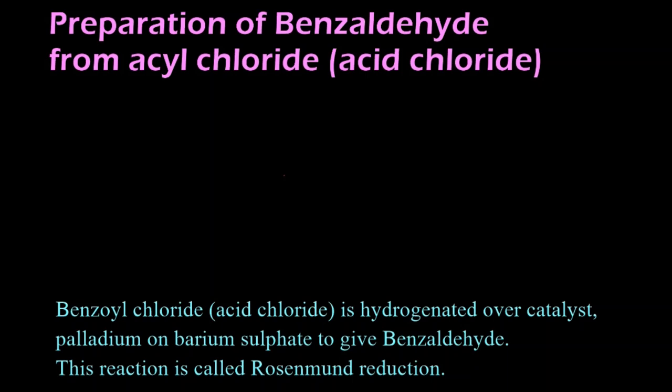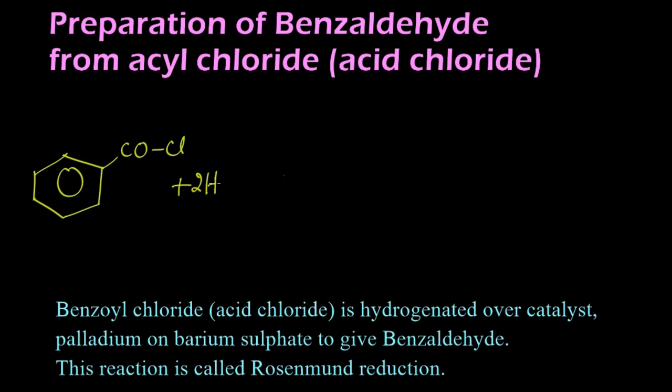In this video we are going to learn the preparation of benzaldehyde from acyl chloride, that is benzoyl chloride. Let's write the structure of benzoyl chloride first. In the benzene ring, COCl will get attached — this is called benzoyl chloride. We are going to reduce it in the presence of palladium on barium sulphate (BaSO4). Here palladium acts as a catalyst and barium sulphate acts as a catalytic poison.